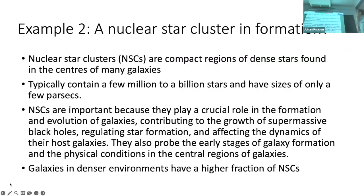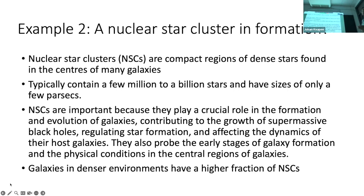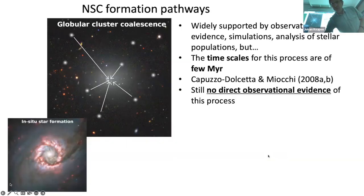The second example is a nuclear star cluster in formation. A nuclear star cluster is a compact region of dense stars found in the centers of many galaxies — they are bright, typically containing a few million to a billion stars, with sizes of only a few parsecs. These nuclear star clusters are important because they play a crucial role in the formation and evolution of galaxies — they contribute to the growth of supermassive black holes, can regulate star formation, may affect the dynamics of the host galaxy, and probe the early stages of galaxy formation. Galaxies in denser environments have more of these nuclear star clusters.